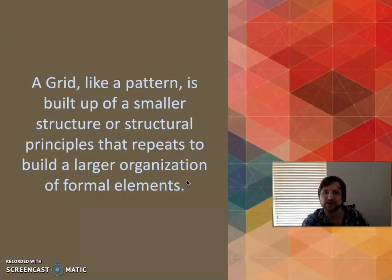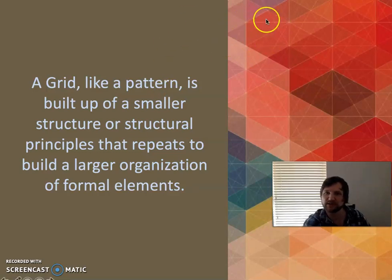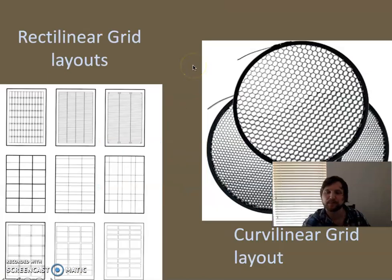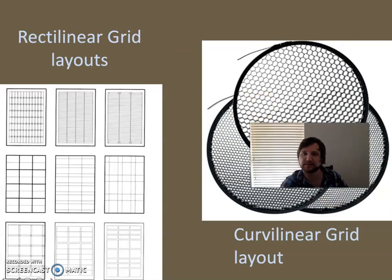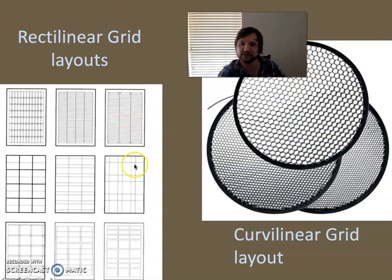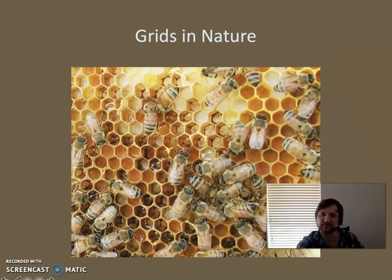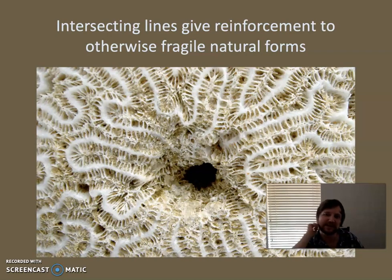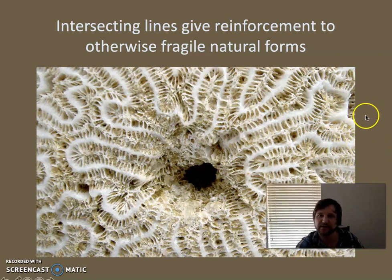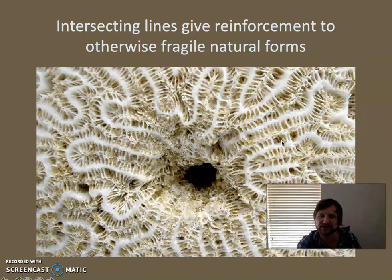A grid is built of smaller structures or structural principles to form a larger organization of formal elements — if you cut out a little square out of it, it kind of looks similar to the rest. Grids can be rectilinear — most are — but they can also be curvilinear. A honeycomb, for example, is a nature version of a grid, a more curvilinear kind of grid. Grids can structurally give something more surface area, and these intersecting lines can make something more robust and reinforce a structure — that's why nature uses grids.